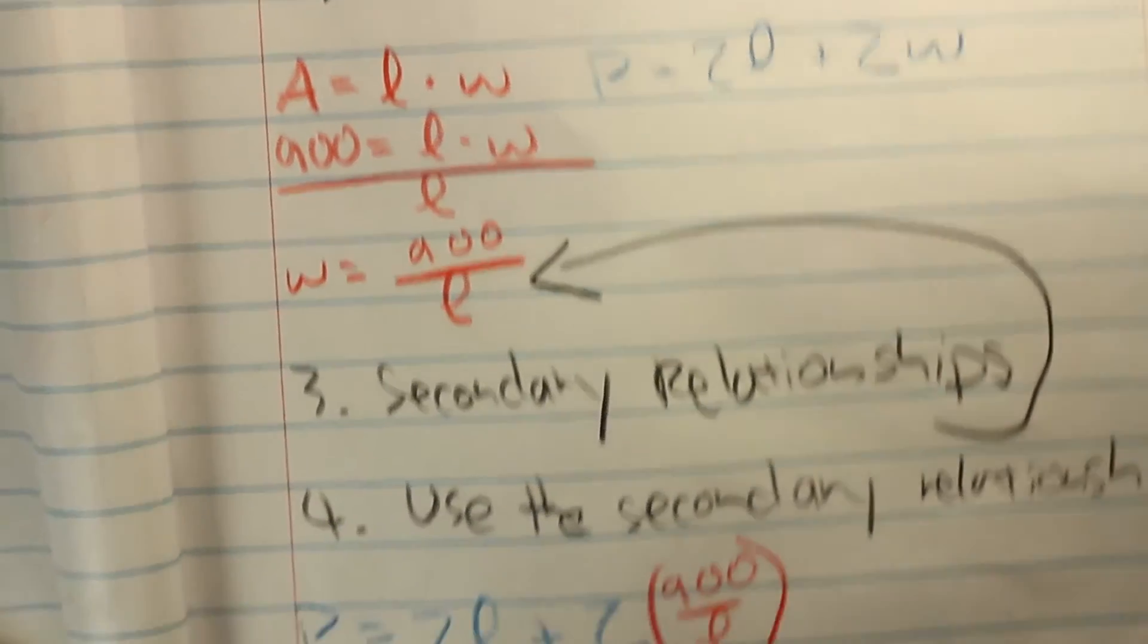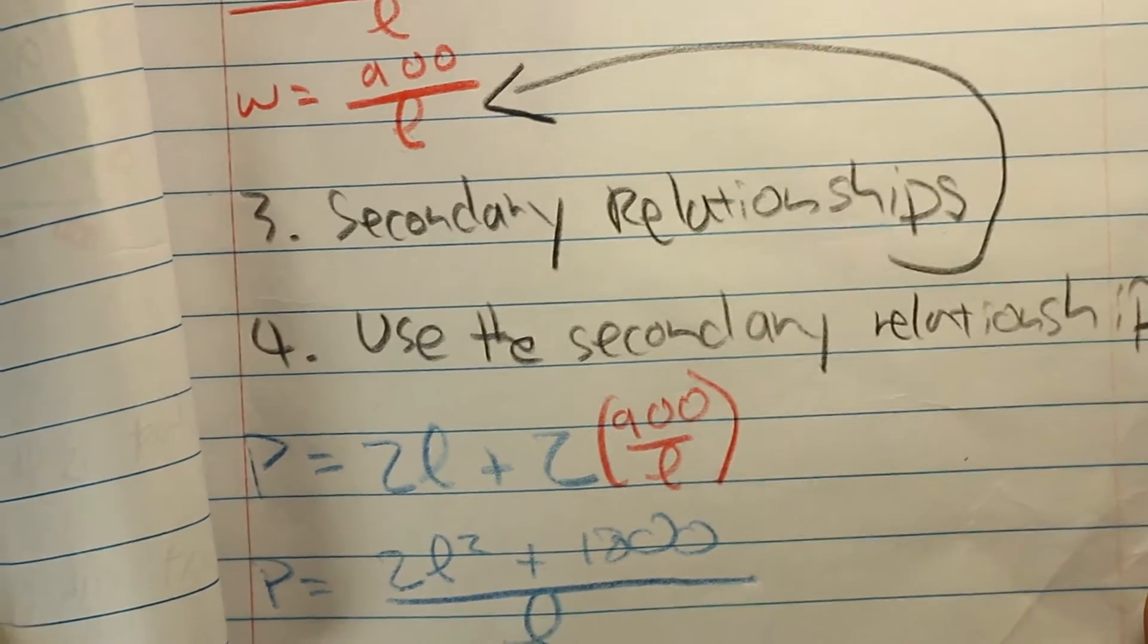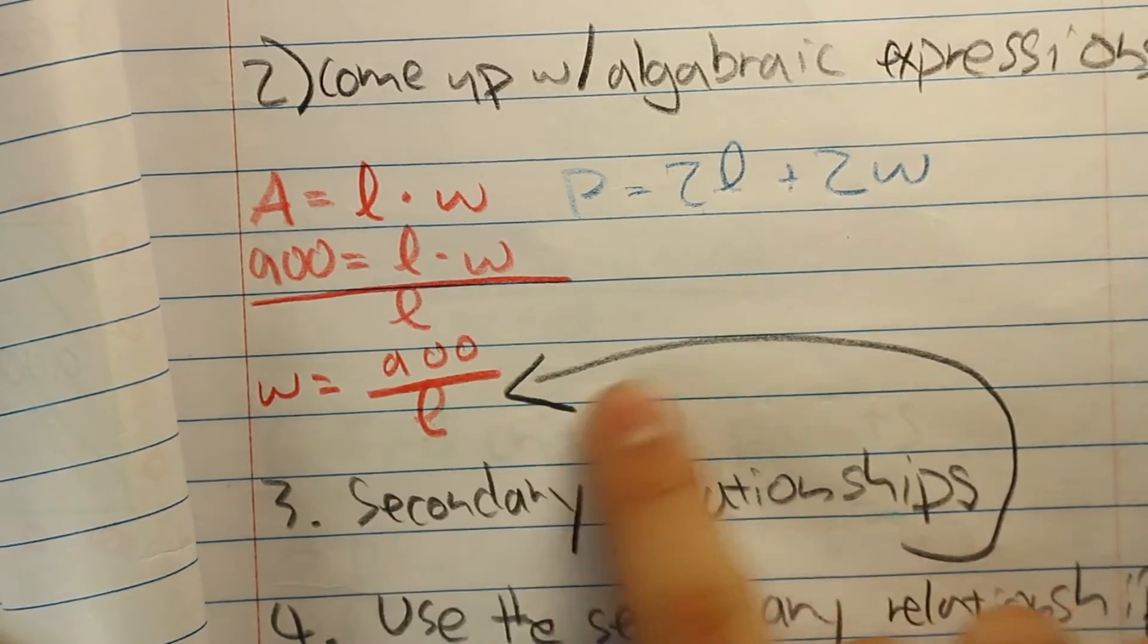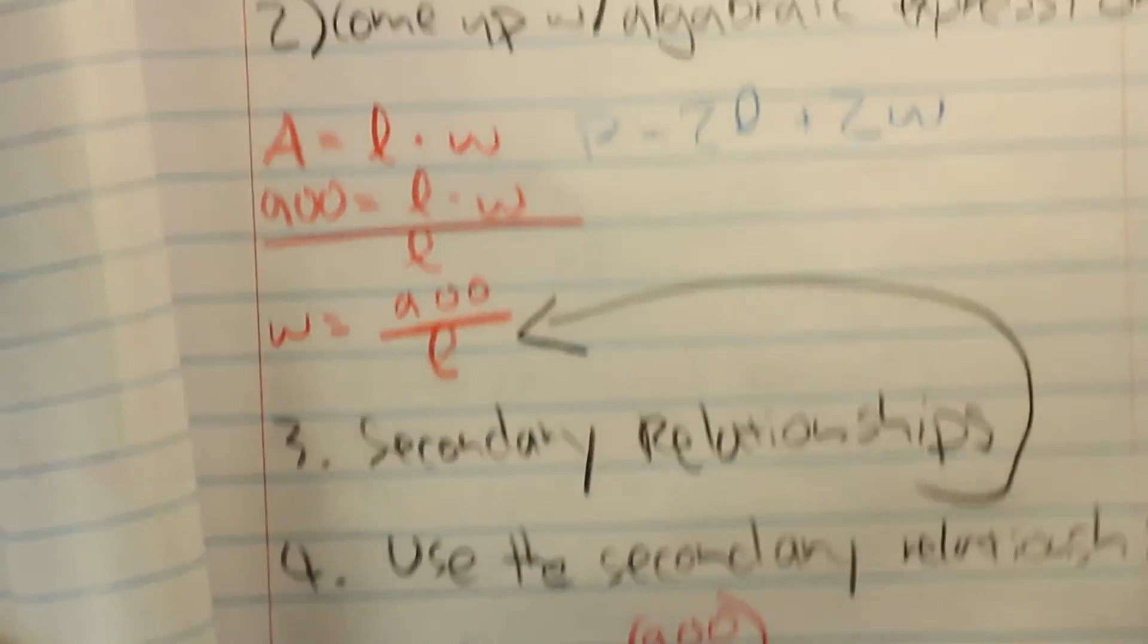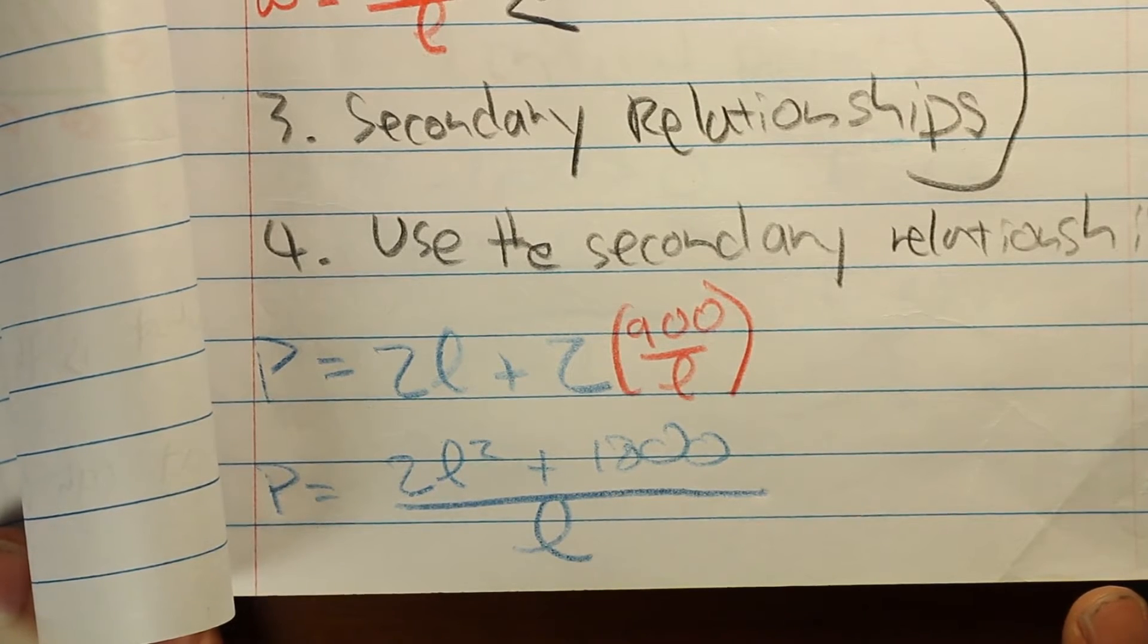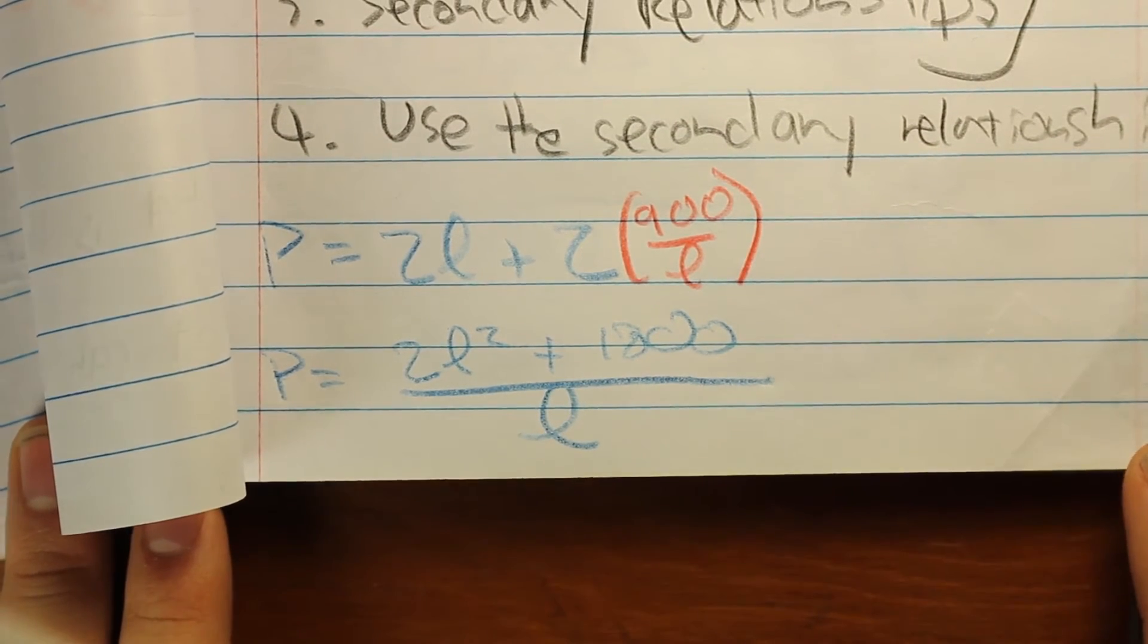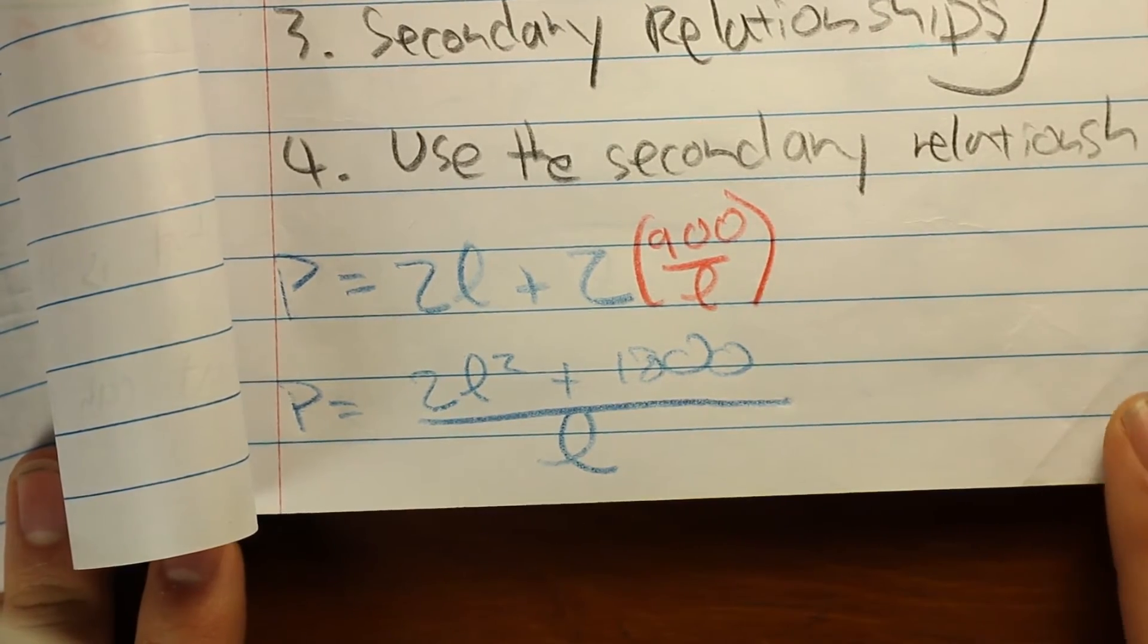From there, you can use that secondary relationship and plug it into the perimeter formula to solve for the perimeter. So just take this W, this width, and plug it back into that width of the perimeter formula. So you got perimeter is 2 times length plus 2 times 900 over L, and perimeter equals 2L squared plus 1800 over L. And that is using just one variable, which is what we want.